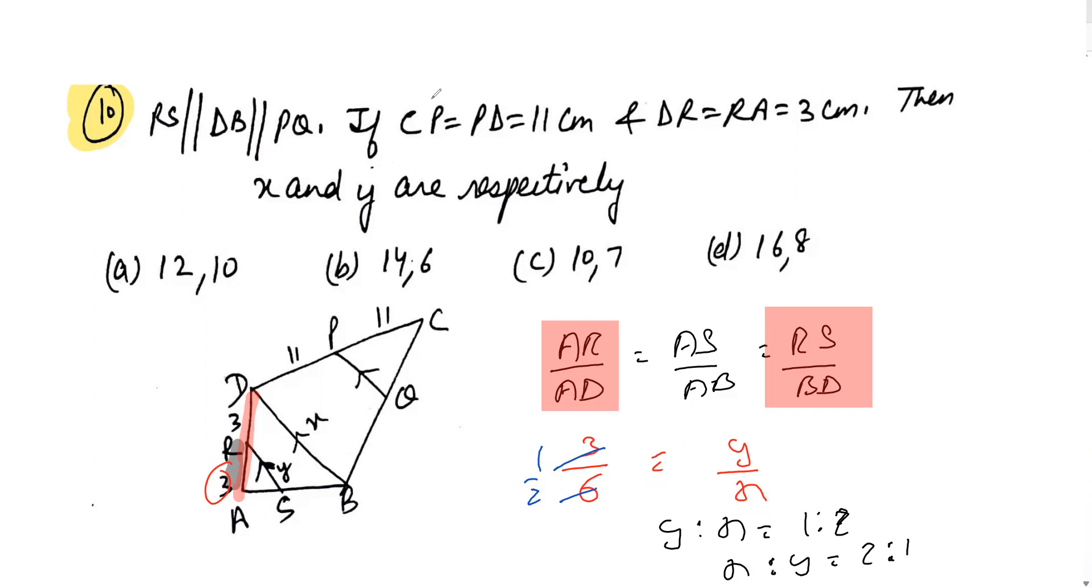Now comparing the options given here, x and y should be in the ratio of 2 is to 1. This is not in the ratio of 2 to 1. This, on reducing, we will get 6 is to 5. Similarly this one, reducing we are getting 7 is to 3. But when you see the last option, 16 upon 8, when reduced it is 2 is to 1. Therefore this should be considered as the correct answer.